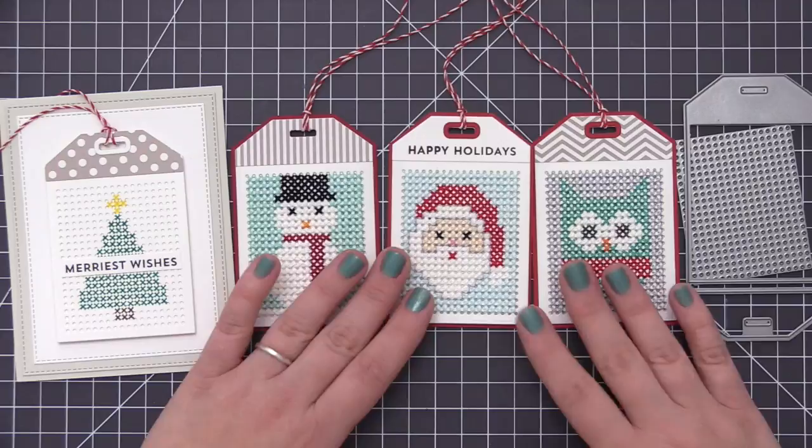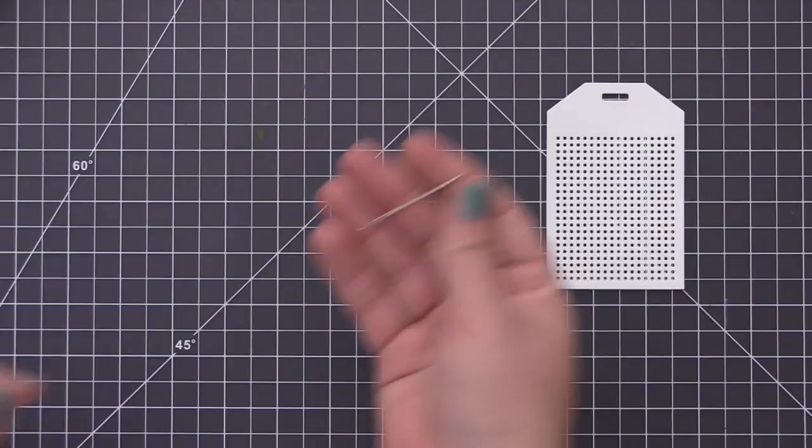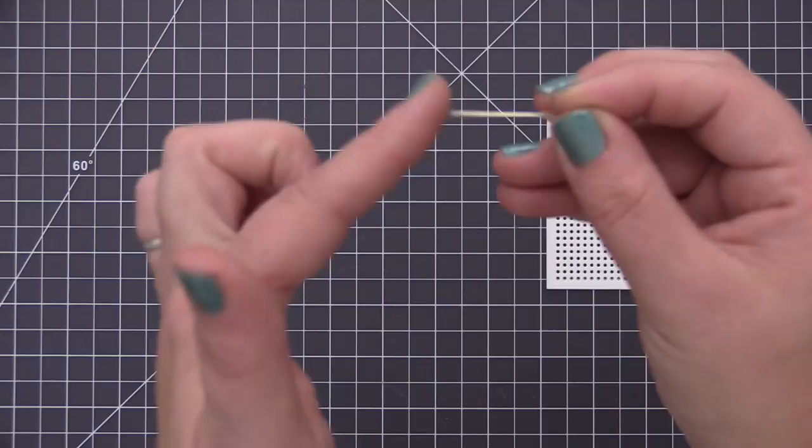I want to go through the basics of how you do the cross stitching on these tags. I have done this for years and years. It's a really fun hobby and it's really fun to translate it into paper. To start off, I have my tag which is die cut, and I also have a sewing needle.